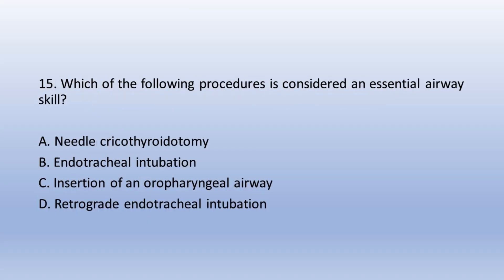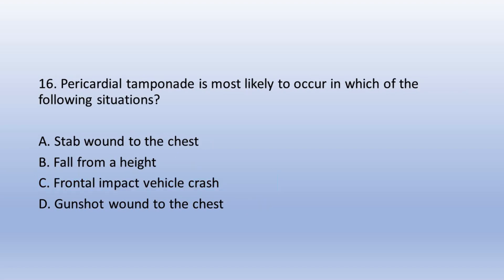Question 15. Which of the following procedures is considered an essential airway skill? A. Needle cricothyroidotomy, B. Endotracheal intubation, C. Insertion of an oropharyngeal airway, D. Retrograde endotracheal intubation. The answer is C. Insertion of an oropharyngeal airway.